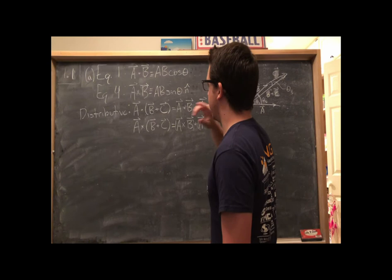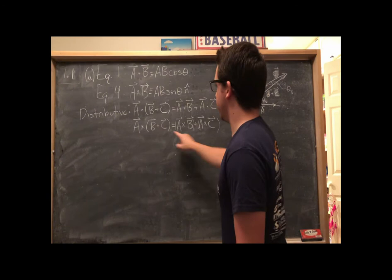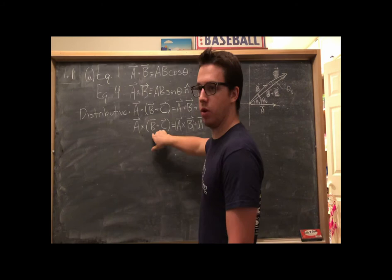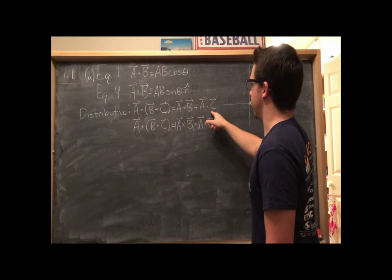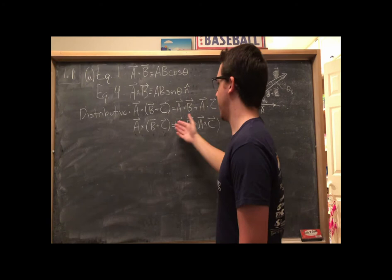Now, if we're going to show that these two, that dot product and cross product are distributive, we're looking for equations in this form, a vector dotted or crossed with a summation of two other vectors and saying that you can distribute that outer vector into it. The dot product of A and B plus the dot product of A and C is equal to the dot product of A with the summation of B and C, and likewise with cross product.